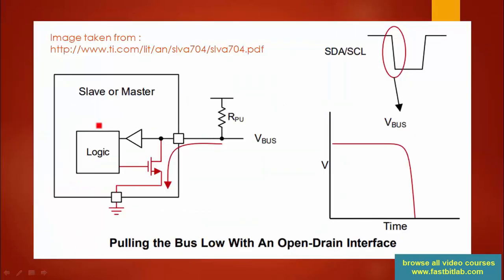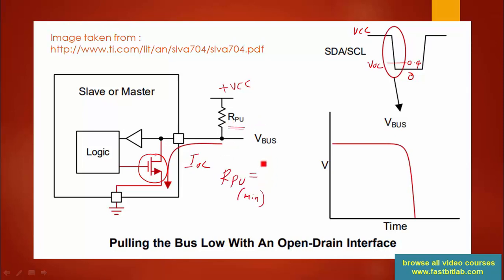Consider the scenario where the signal goes from high to low on either SDA or SCL. VCC is at the top and 0 is at the bottom, with VOL at 0.4 V. When SDA or SCL goes low, the transistor conducts, current flows through the pull-up resistor — that current is IOL. So RPU_min = (VCC − VOL) / IOL = (VCC − 0.4) / 3 mA, giving you the minimum pull-up resistance value.